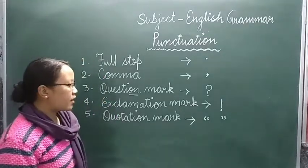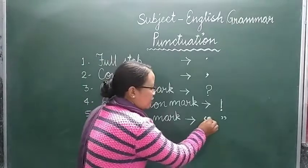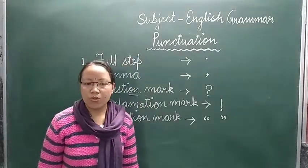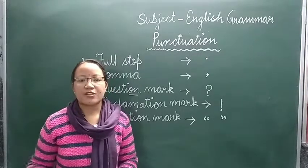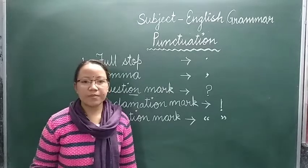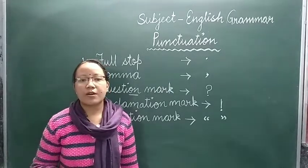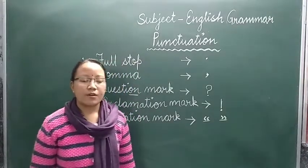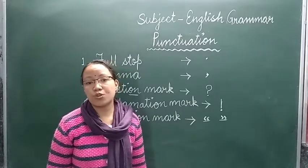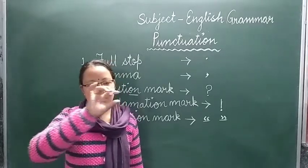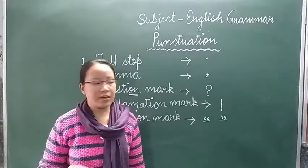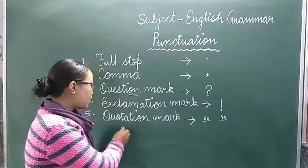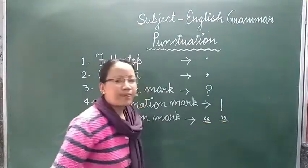Number five is the quotation mark. The quotation mark — this is the symbol: double inverted commas. We use quotation marks when we use some dialogue. For example: when Subhas Chandra Bose said something, we put his words in quotation marks. So when someone says something directly, we use double inverted commas.